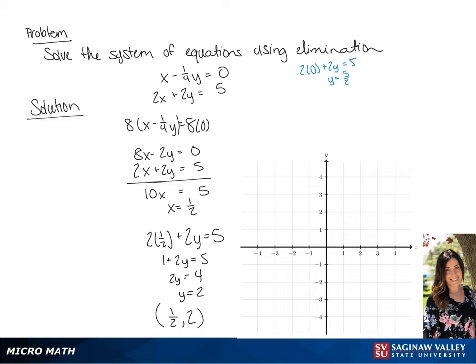which we find to be 5 over 2. Now we're going to find the x intercept. This is going to give us x equals 5 over 2 as well. So we're going to graph this line.